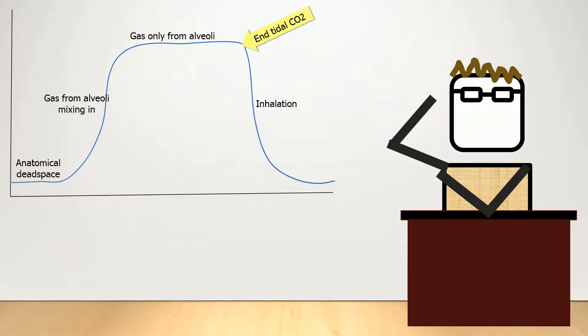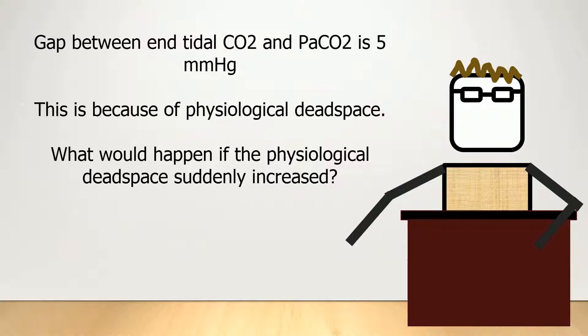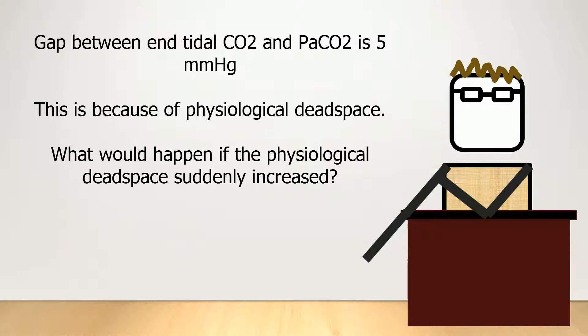People with normal lungs will have a rectangular-shaped capnograph, and the difference between the end-tidal CO2 and the pCO2 measured in the blood on a blood gas will only be about 0 to 5 mm of mercury. This gap exists because there is physiological dead space even in a normal person.